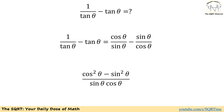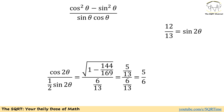Now let's go back and see what we can do with 1 over tan of theta minus tan of theta. If we write what we have for tan of theta, we can simplify it and write it as cosine of theta over sine of theta minus sine of theta over cosine of theta. Using sine of theta times cosine of theta as the common denominator, we get cosine squared of theta minus sine squared of theta over sine of theta times cosine of theta. We know that cosine squared of theta minus sine squared of theta can be written as cosine of 2 theta.